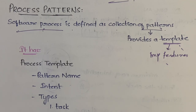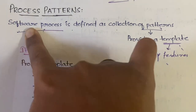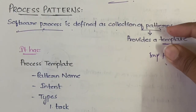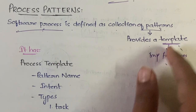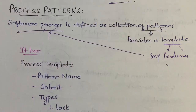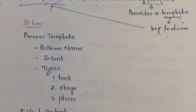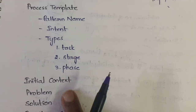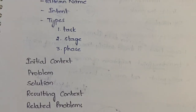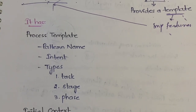So let us see what the process patterns are and learn about each of them in detail. Now, what are the different process patterns we have? First we have the process template, then initial context, problem, solution, resulting context, and related problems. These are the patterns we have, and in the process template we have a few more subcategories.